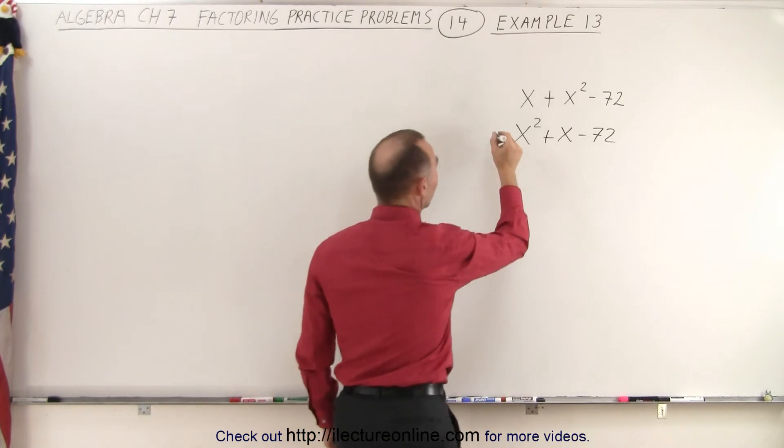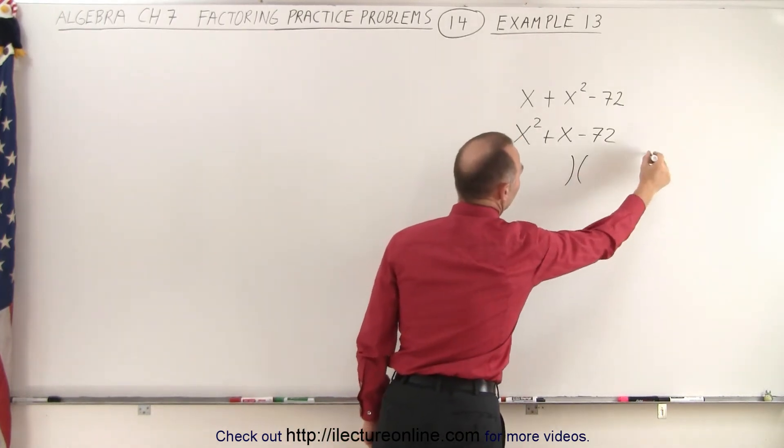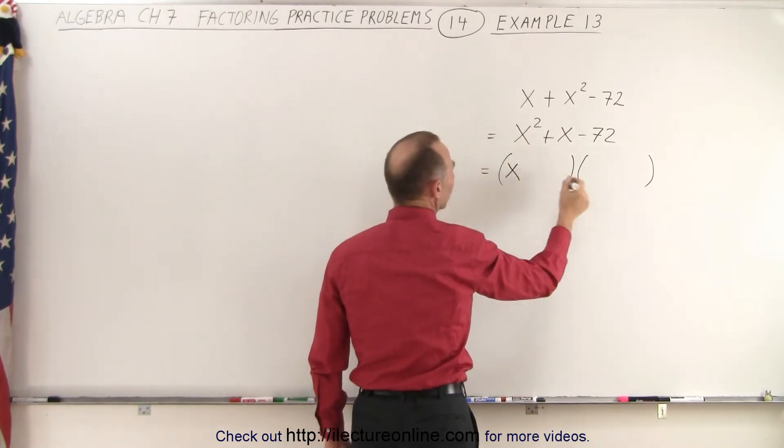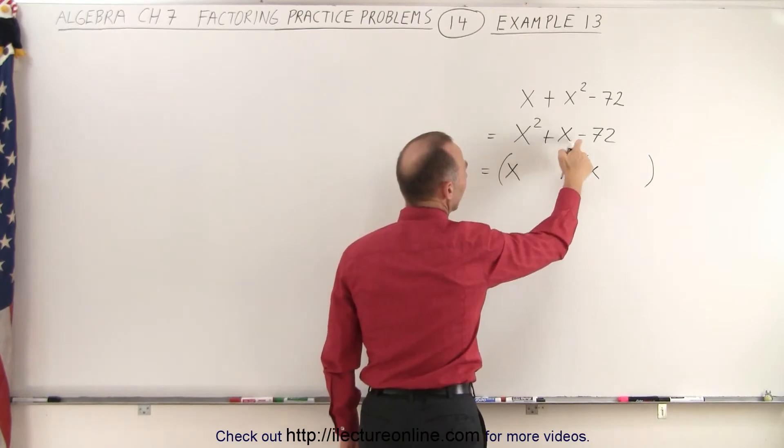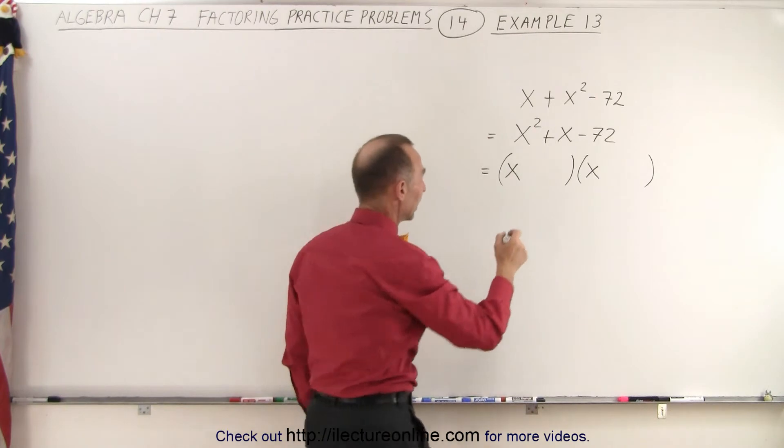And then we realize that this, when it's factored, is going to look something like this, the product of two binomials. And to get the first term, we're definitely going to need an x and an x. And notice we have a positive here and a negative there, which means that one must be positive and one must be negative.